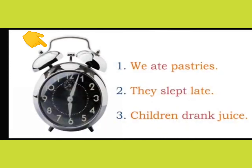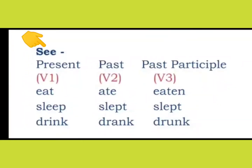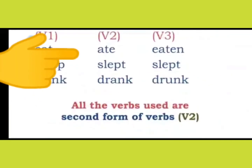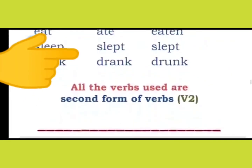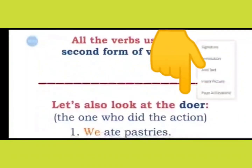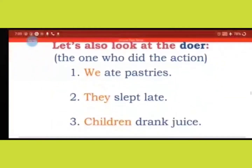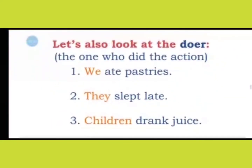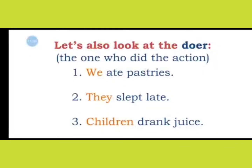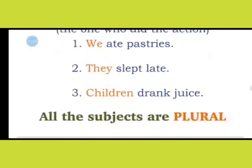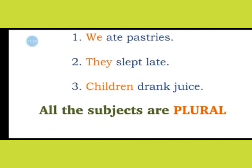Now all three verbs — ate, slept and drank — let's see which forms of verbs they are. Under V2, you see all the verbs that we have used in our sentences: ate, slept and drank. All the verbs used are the second form of verbs, that is V2. Now let's also look at the doer — the one who did the action, or we also call them subjects. Here in orange color you will see the subjects: we ate pastries, they slept late, and children drank juice. So the subjects are we, they and children — and they are all plurals because they refer to more than one person.